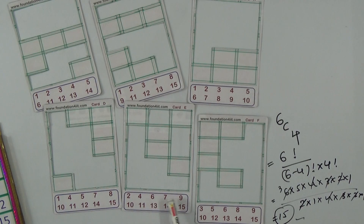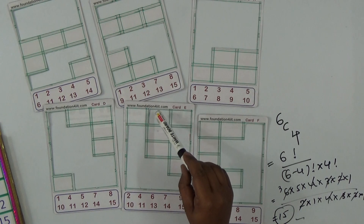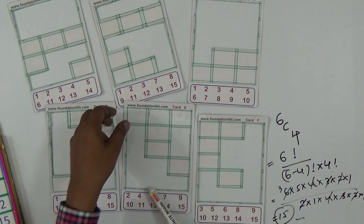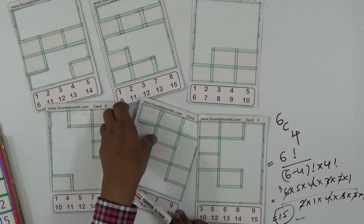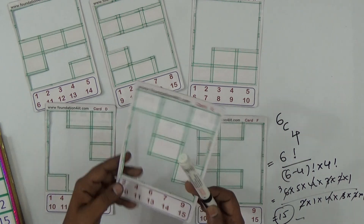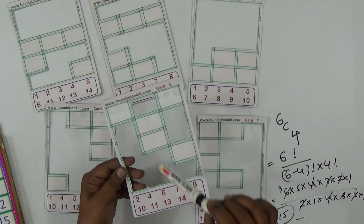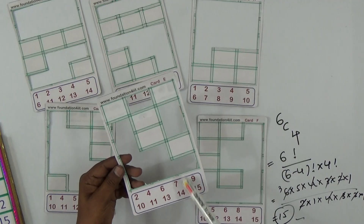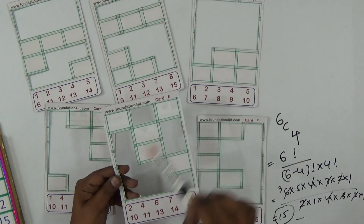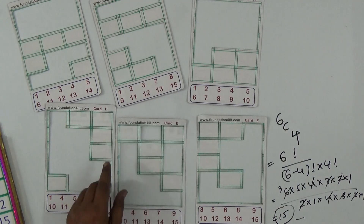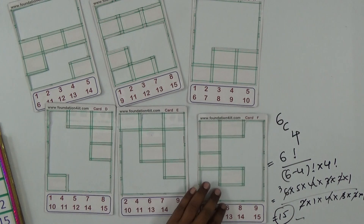On card E and F, for example, number 2 is in an empty position, and number 4 is in another empty position. Wherever a number appears on a card, that position should be cut out or left empty. The remaining structure forms the card.